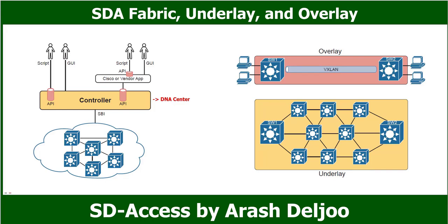Cisco Software Defined Access creates an entirely new way to build campus LANs. SDA uses the software defined architectural model with a controller and various APIs — application programming interfaces. It still uses a physical network with switches, routers, cables, and various endpoints. At the center sits the DNA Center controller, with human users making use of a GUI and automating using APIs. In short, DNA Center is the controller for SDA networks.